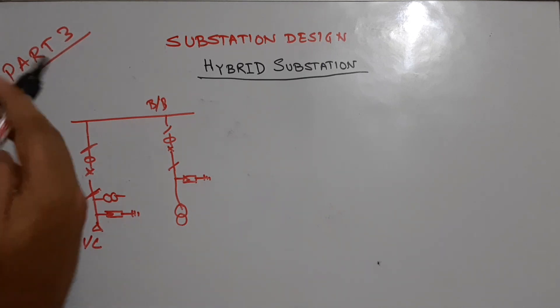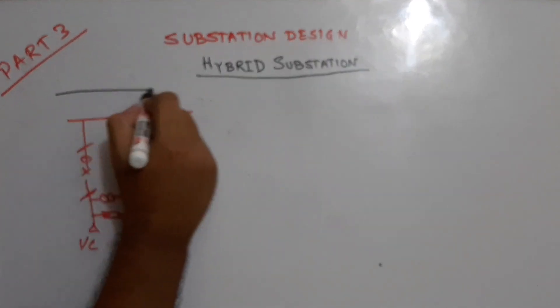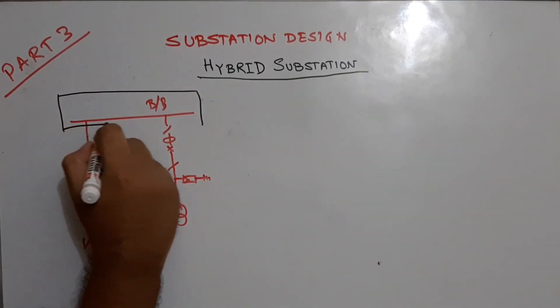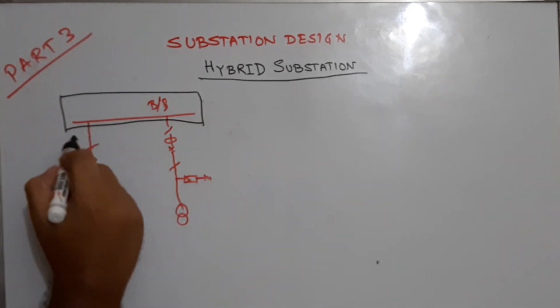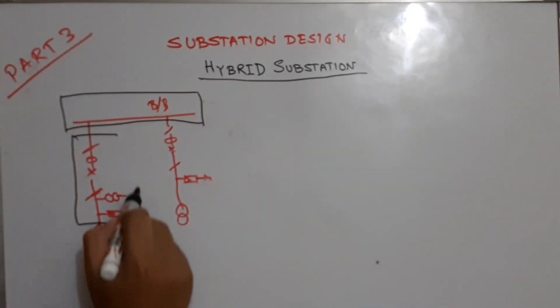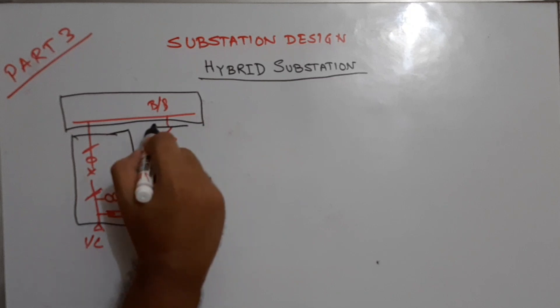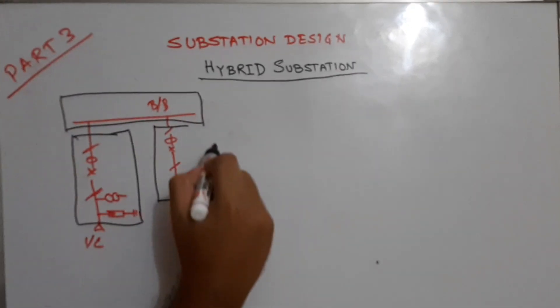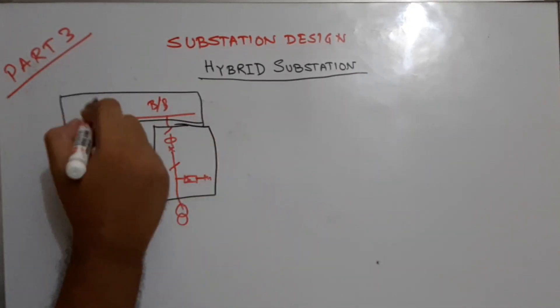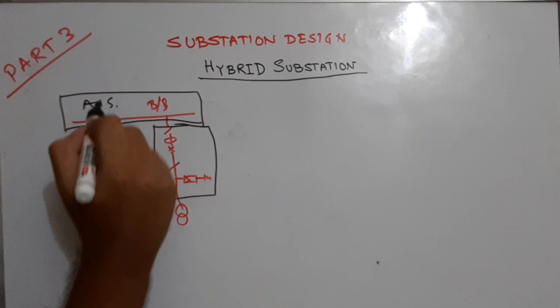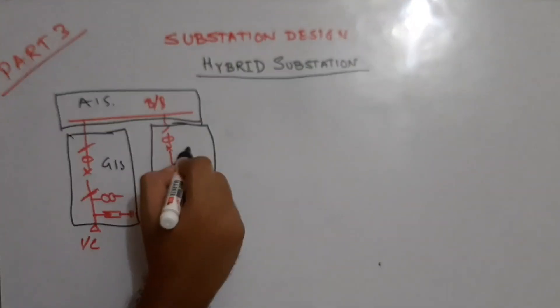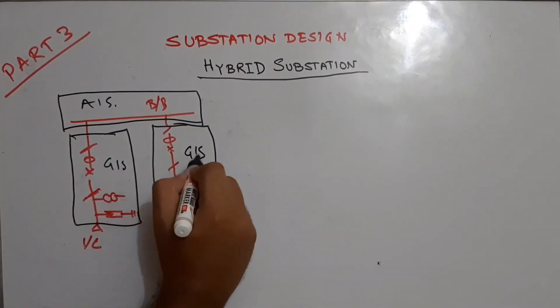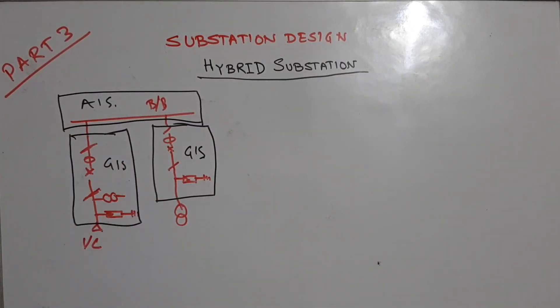For this to be a hybrid substation, the bus bar portion will be air insulated type — this is the AIS section. The switchgear portion will be gas insulated and enclosed — this is the GIS section. This is how the hybrid substation is formed.